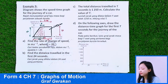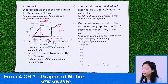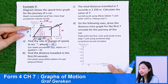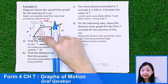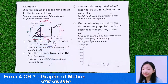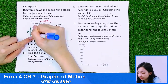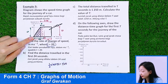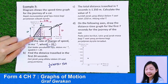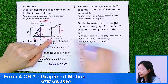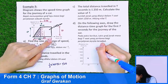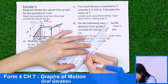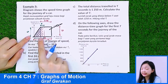Part D: Draw the distance-time graph for the first t seconds. When time is 20, the distance is the area of the triangle: 1/2 times 20 times 50 equals 500 meters. When time is t equals 35, the distance traveled is 1250 meters. I plot these points and draw the distance-time graph, which shows a curve transitioning to a straight line.